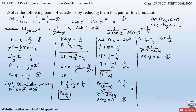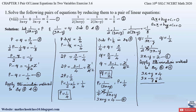Now apply the elimination method to equations 5 and 6. Equation 5 is 3x + y = 4 and equation 6 is 3x − y = 2. The coefficient of y is 1 with opposite signs, so we eliminate y directly. Adding: 3x + 3x = 6x and 4 + 2 = 6, giving 6x = 6, so x = 1.